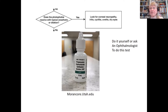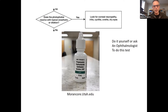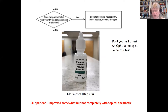The next step is to put a drop of proparacaine into the eye of the individual with eye pain and photophobia. You can do this yourself or ask an ophthalmologist. The only caution is to have the patient remove contact lenses first — other than that, you won't do any harm. Then ask how much of the pain or light sensitivity is reduced. In our patient, it improved her eye pain a little bit, but it wasn't complete — she still had eye pain and was still photophobic.